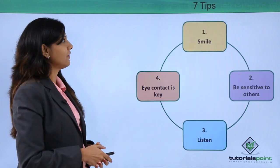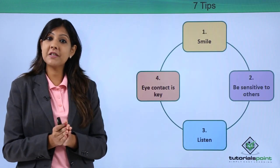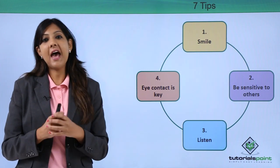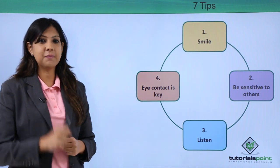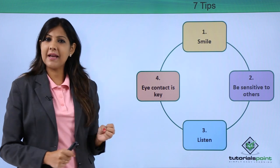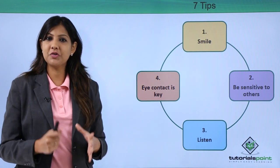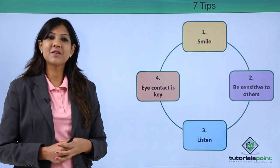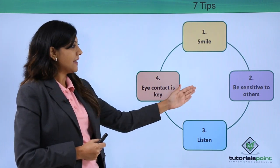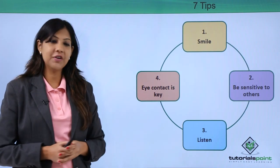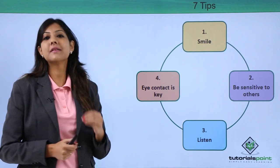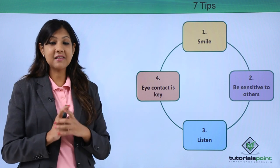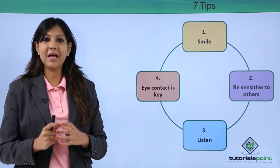There are seven tips to become more socially intelligent. The first is smile — nobody wants to meet someone who is always frowning, so always smile. Second is be sensitive towards others. Third is listen — do not just hear, truly listen. There's a difference: do not listen to reply, but listen with full listening powers.